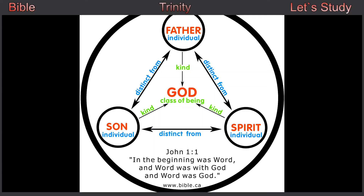In Genesis chapter 2, God causes it to rain upon the earth in the image of God, after the creation of mankind, who was brought forth in the image of God. So we saw that in the physical, but we have a spiritual understanding of that too.